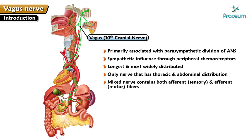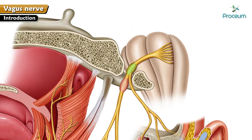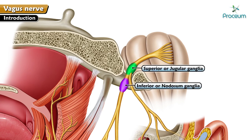The vagus nerve is a mixed nerve as it contains both afferent or sensory and efferent or motor fibers. This means it is responsible for not only carrying motor signals to the organs it innervates, but also carrying sensory information from these organs back to the central nervous system. It has two sensory ganglia: superior or jugular, and inferior or nodosum.